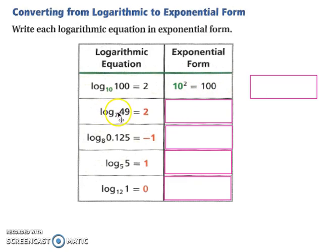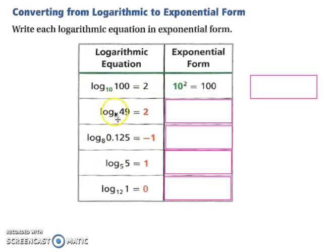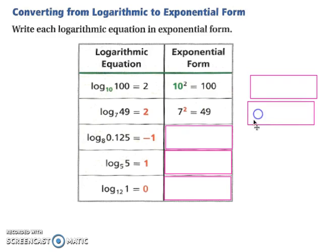Let's try this next one: log base 7 of 49 equals 2. Therefore, we have 2 as our exponent and 7 as our base, and that has to equal our 49. The base always stays the base; what the log is of and what it equals get to switch places.